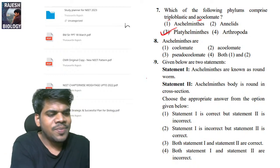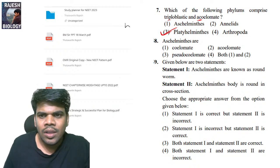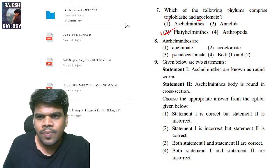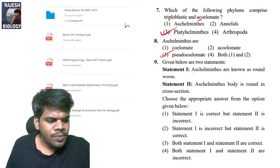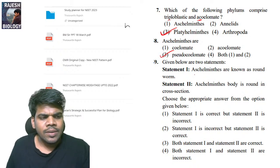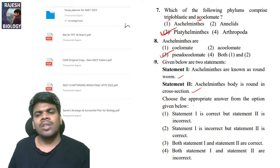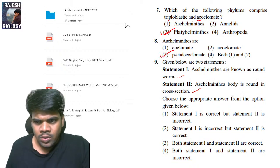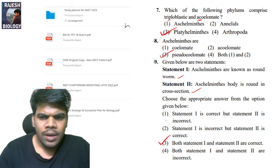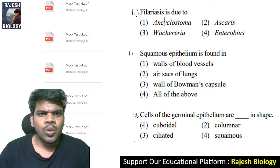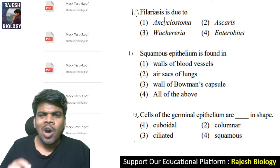Given below are two statements: Aschelminthes are known as roundworms — correct. Aschelminthes body is round in cross-section — that is also correct, that's why they are called roundworms. So statement one and statement two are both correct. The answer is three. Question nine is also three.